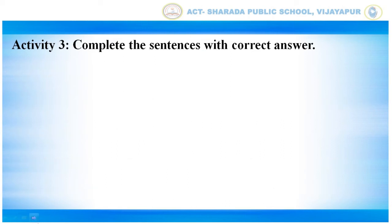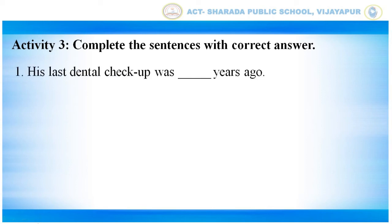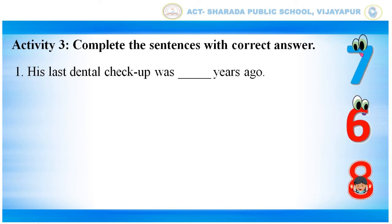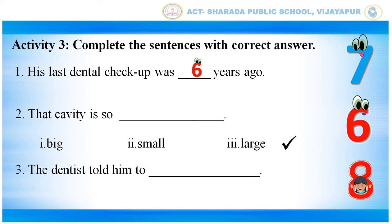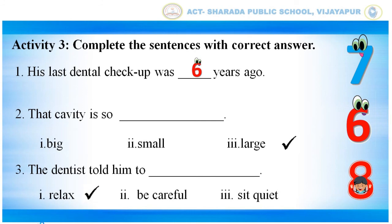Activity 3. Complete the sentence with the correct answer. His last dental checkup was dash years ago — options are 7, 6, or 8. The correct answer is 6 years ago. That cavity is so — big, small, or large? The dentist told him to — relax, be careful, or sit quiet? The correct answer is relax.